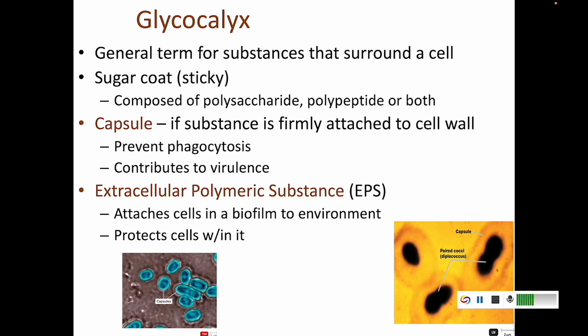An extrapolymeric substance, or EPS, is a sugar coat around a cell that helps it attach into a biofilm. That biofilm allows cells to work together to protect each other. We've already mentioned biofilms a little bit, and we'll come back to them a few more times throughout the semester.